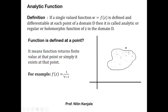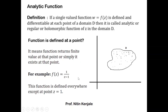For example, consider f(z) equal to 1/(z−1). It is clear that if z equals 1, then this function f(z) does not exist. Therefore, f(z) is defined everywhere except at the point z equal to 1.